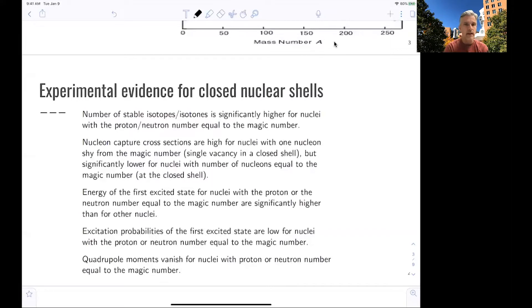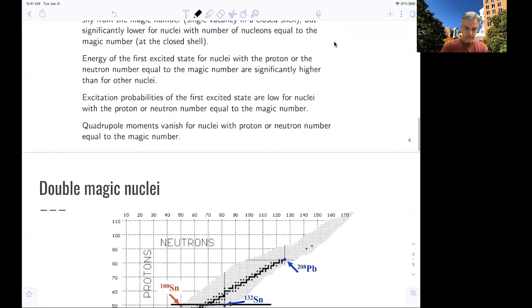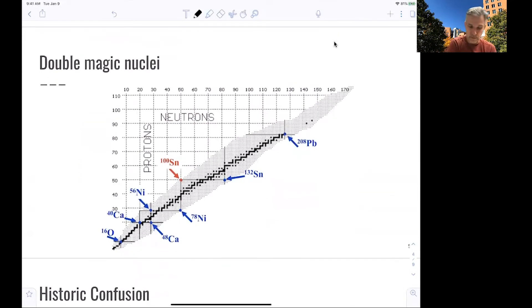Quadrupole moments, we haven't discussed those at length, but you can think about them as deformations of the nuclei. They almost vanish for nucleus with proton or neutron numbers equal to the magic numbers. So those are more spherical objects. Here's a plot which shows the double magic numbers. Those are nucleus where both the proton number and the neutron number are on the double magic number. Calcium here has two of those with 20 protons and 20 neutrons, or 20 protons and 28 neutrons. Those are specifically interesting objects of research.